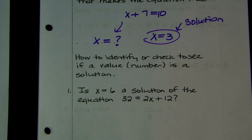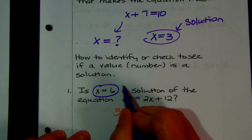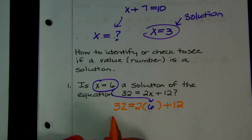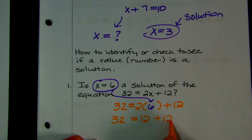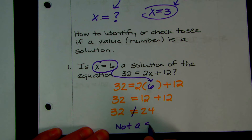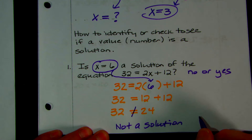How to identify or check to see if a value is a solution: if you want to see if x equals 6 is a solution, you substitute it in. So you have 32 equals 2 times 6 plus 12. We bring our 32 down. 2 times 6 is 12, and 12 plus 12 is 24. So 32 equals 24 — is that true? No, so this is not a solution. In Schoology, you'd type 'no.'